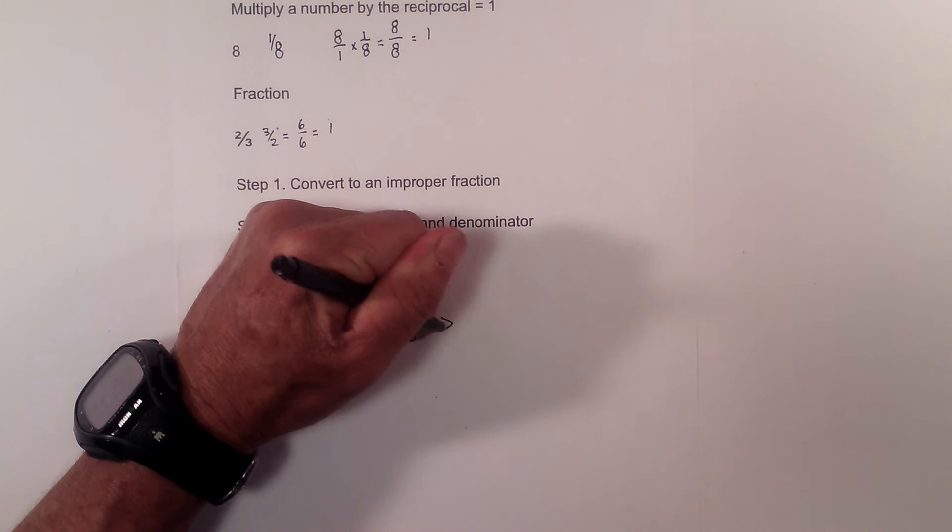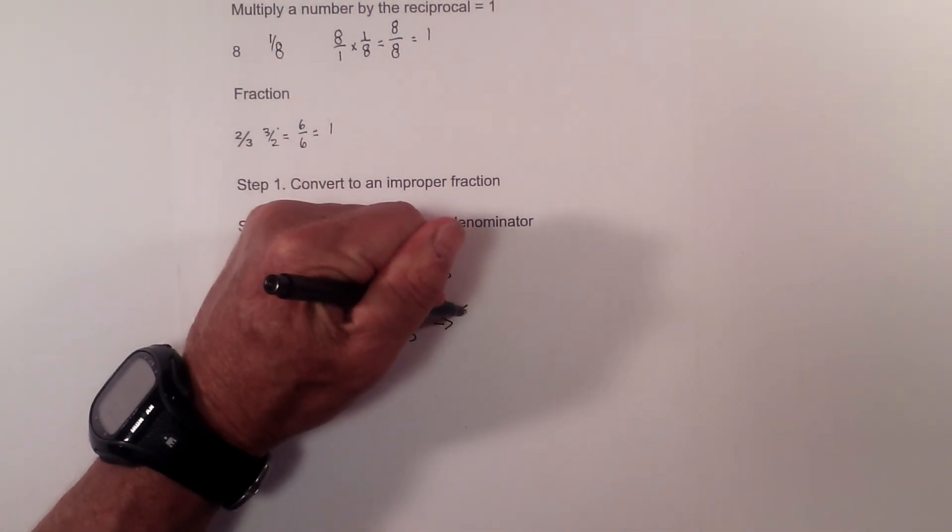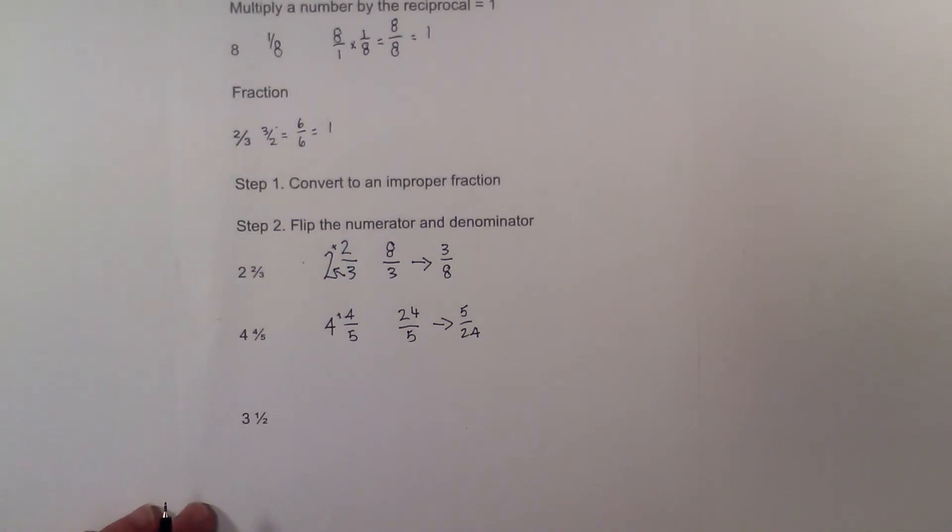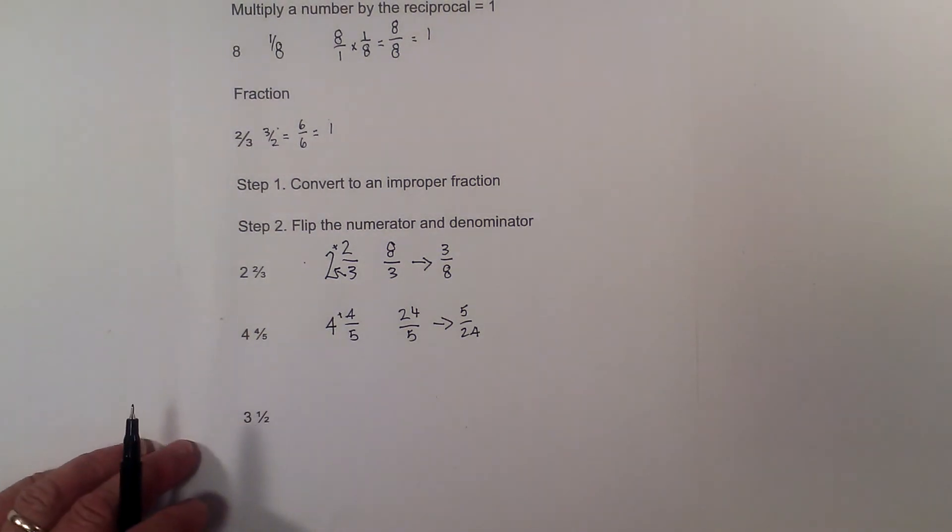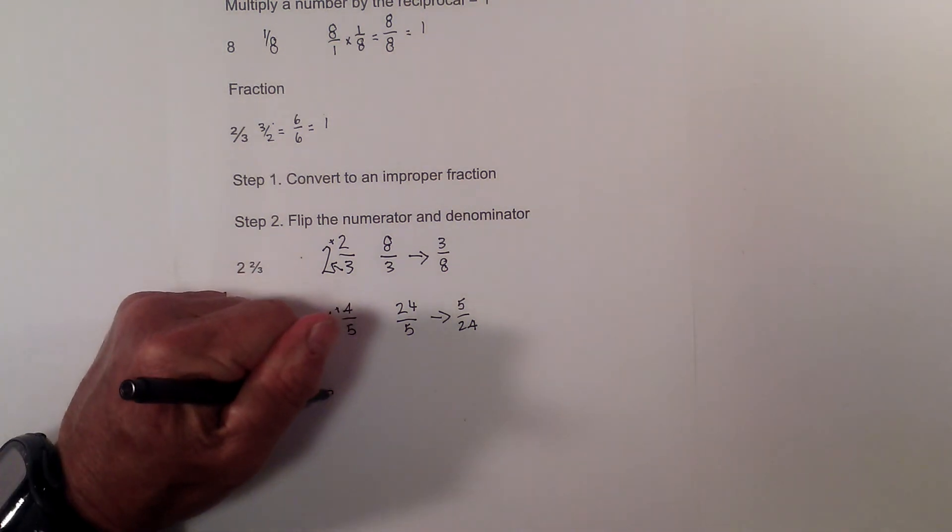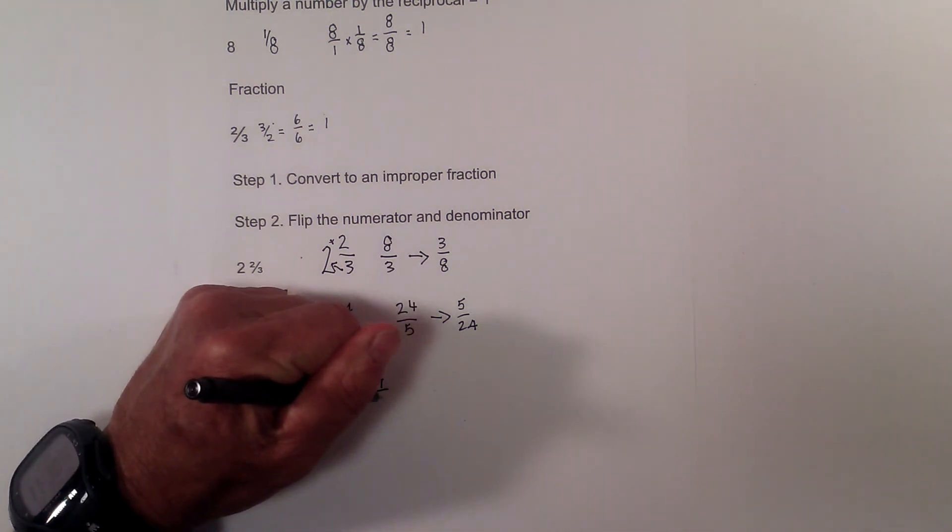And in order to create the reciprocal, it's just 5 over 24. And finally we have 3 and a half. 2 times 3 is 6, plus 1 is 7 halves.